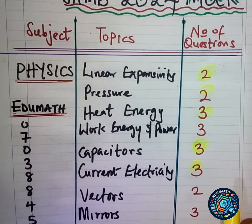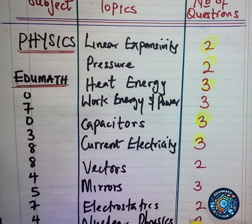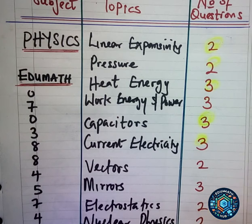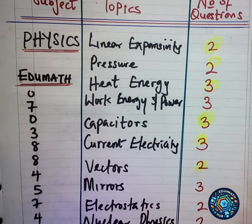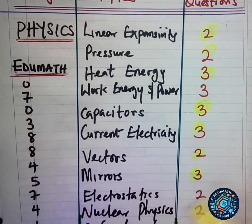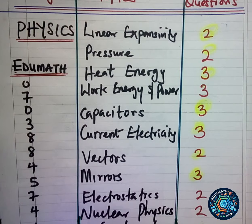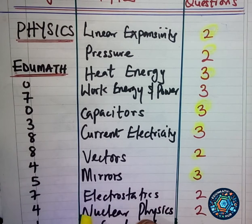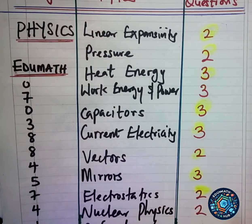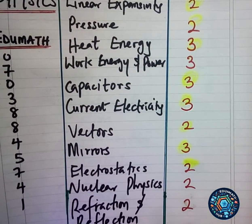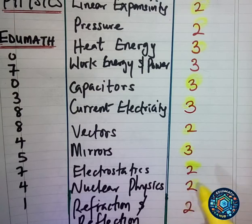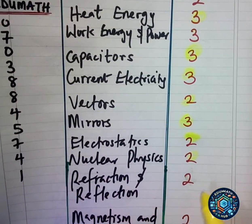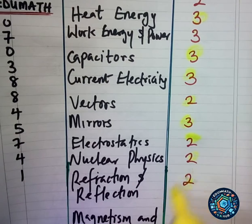Under current electricity, three questions came out. You need to master the energy of capacitors, dielectrics, and related concepts. Under vectors and measurements, two questions came out — in JAMB exams, vectors and measurements typically appear at the beginning, like questions one and two. Under mirrors — concave and convex mirrors — three questions came out, covering focus, radius of curvature, and image types such as virtual and real images. Under electrostatics, two questions. Nuclear and atomic physics had two questions covering atomic models and radioactivity.